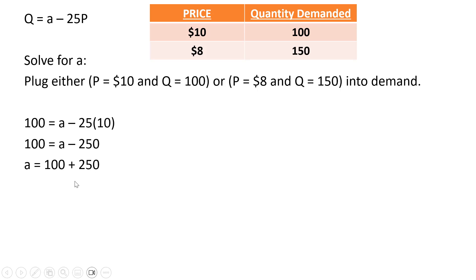Doing a little math here, the a term will equal 350. So our market demand equation then is Q equals 350 minus 25P.